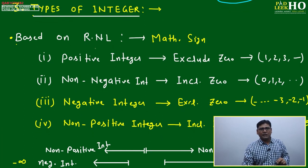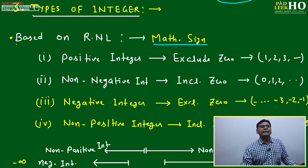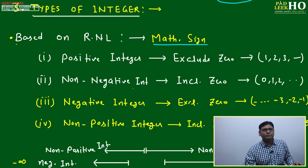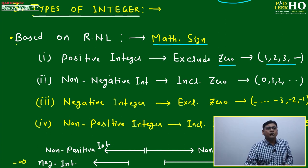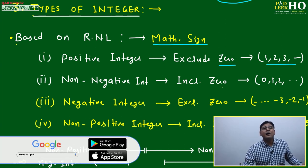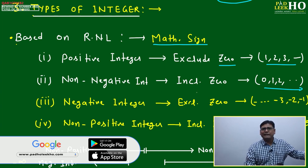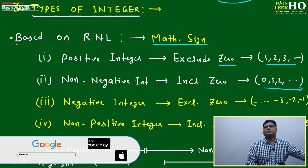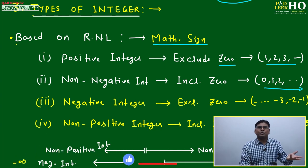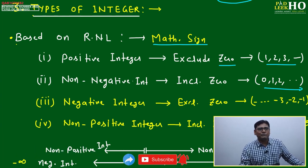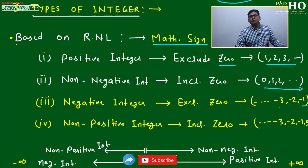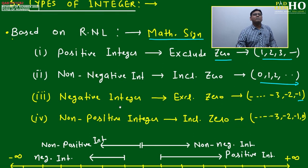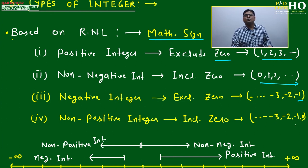Based on the real number line, integers are categorized into four types. Positive integers exclude zero and start with one, two, three, four. Non-negative integers include zero and go zero, one, two, three, four. Negative integers exclude zero and go from minus infinity to minus one. Non-positive integers include zero and go from minus infinity to zero.